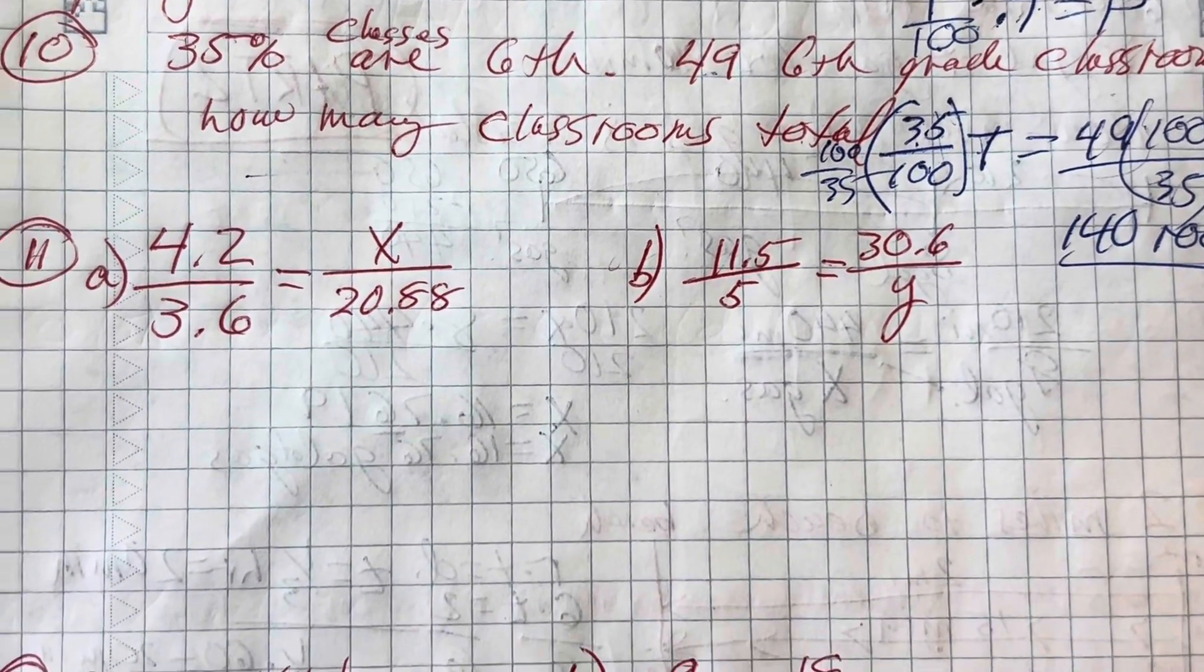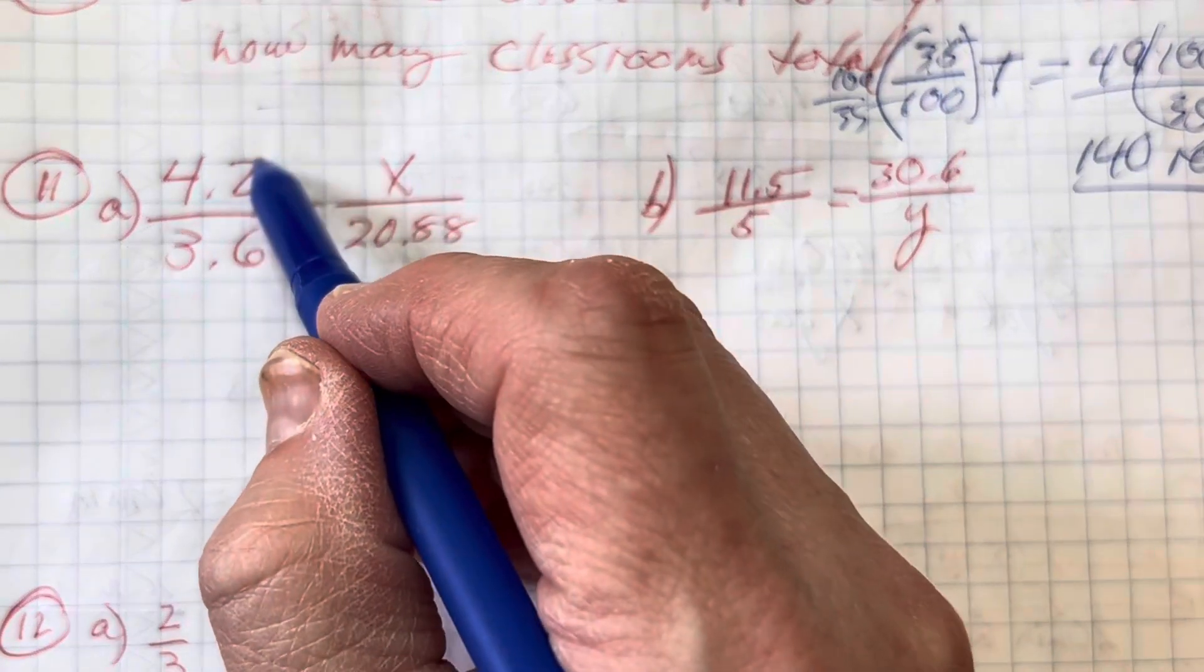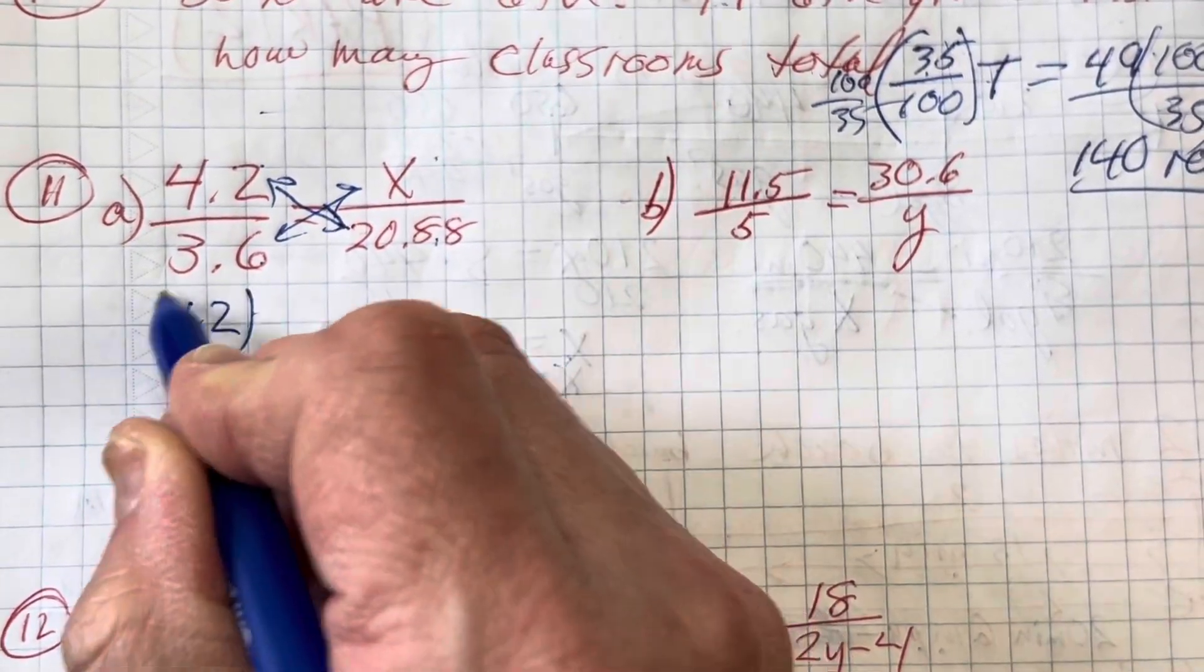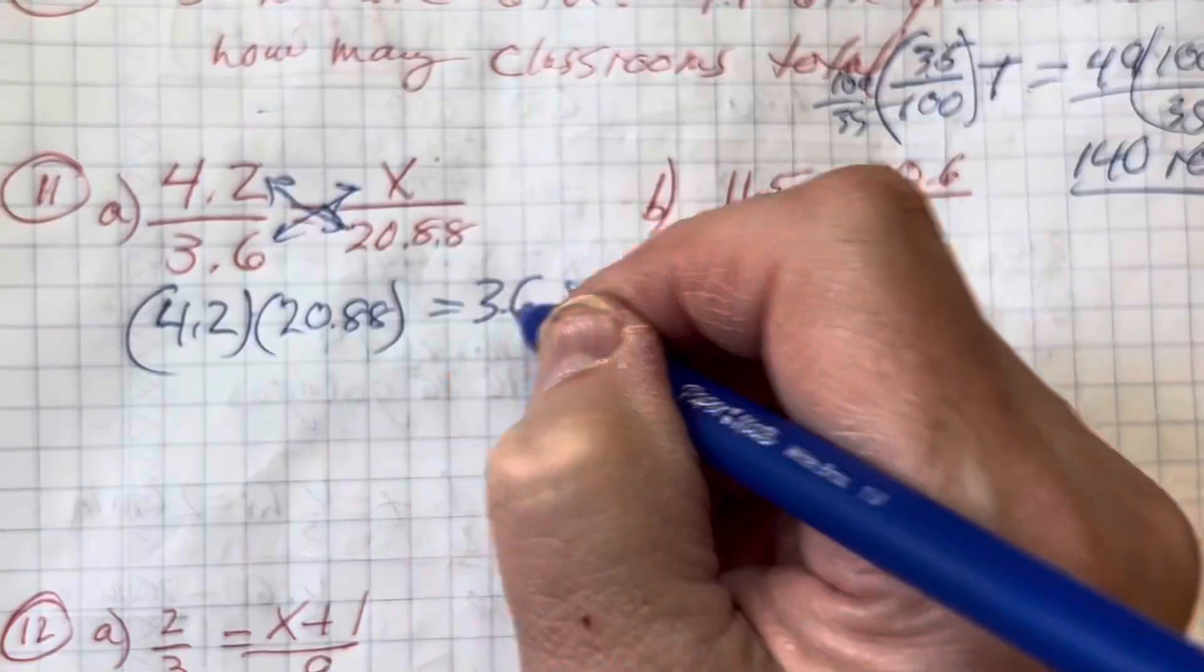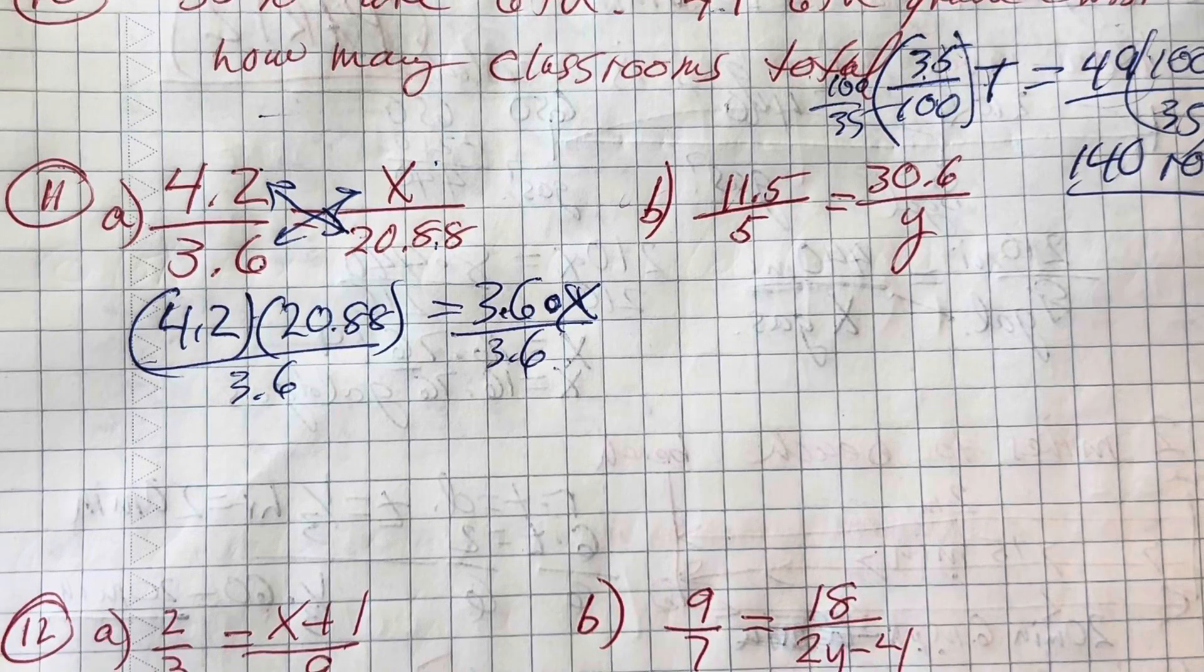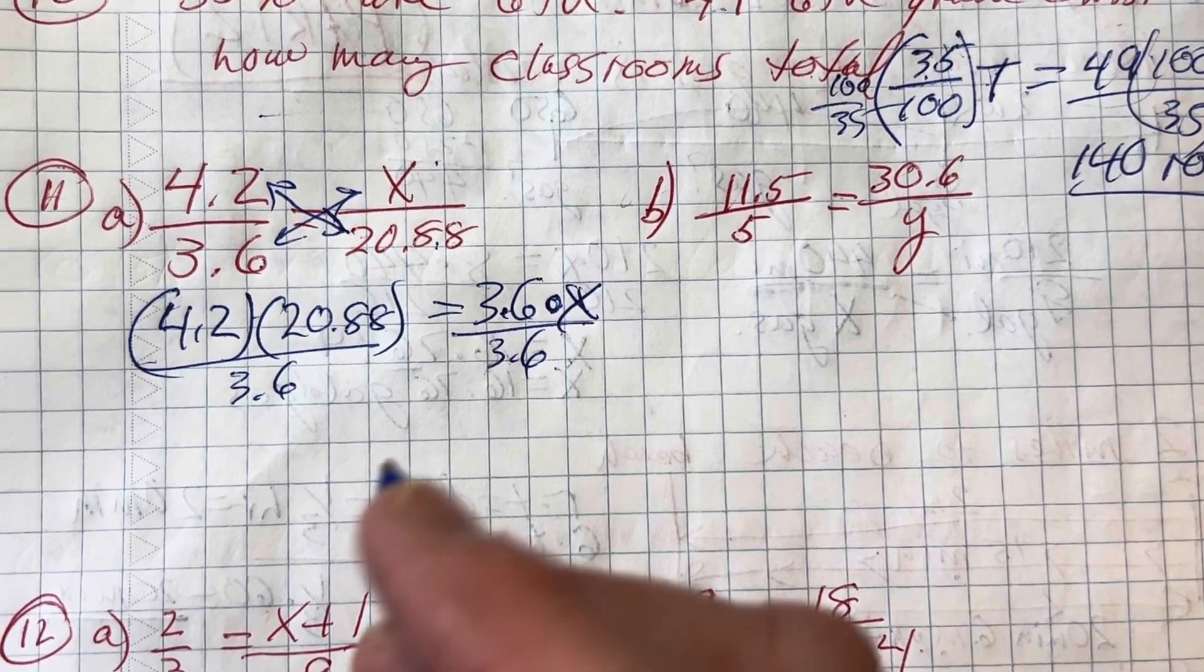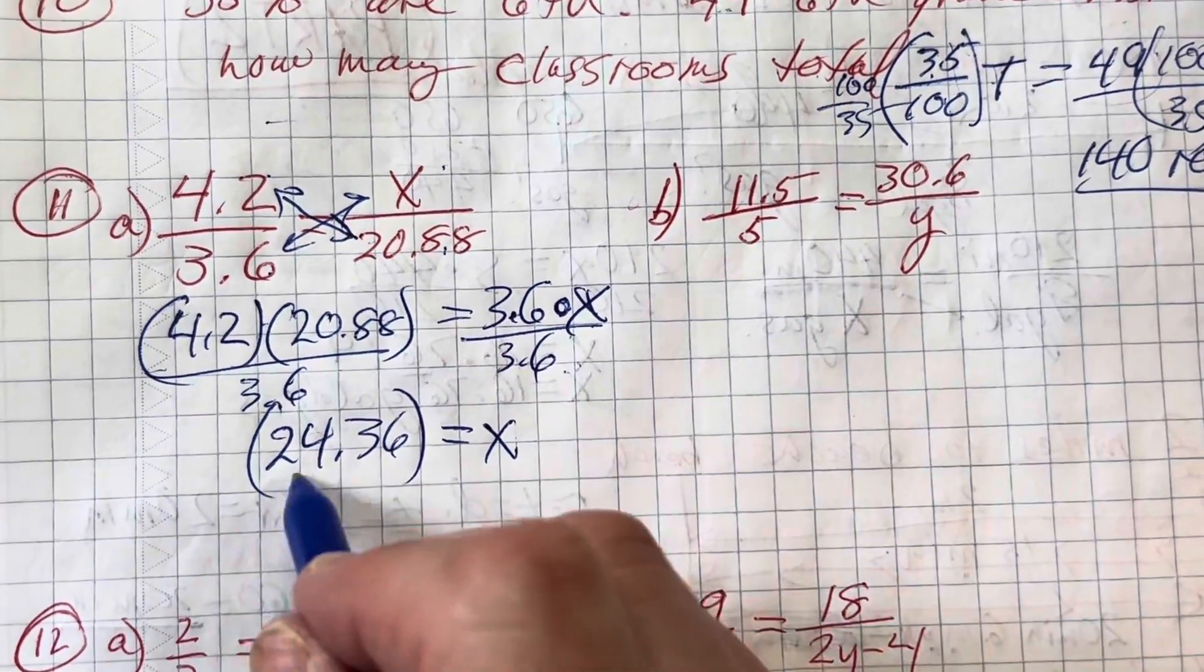For these next problems, number 11ab and 12ab, these are proportion word problems. Are proportion problems, period. We have a ratio of 4.2 over 3.6 equals x over 20.88. We simply cross multiply and solve. I get 4.2 times 20.88 equals 3.6 times x. I'm going to divide both sides by 3.6. And that's why I'm letting you use a calculator on the test. That is going to be x equals 24.36. That's what it is exactly. 24.36.